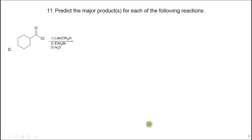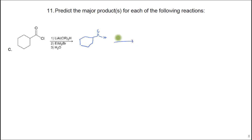Predict the major product. If you have an acid chloride with a lithium reagent, that's going to reduce it to the aldehyde. Then if we react it with the Grignard plus water — steps two and three — we're going to form a carbon bond and an alcohol with addition of an ethyl group.